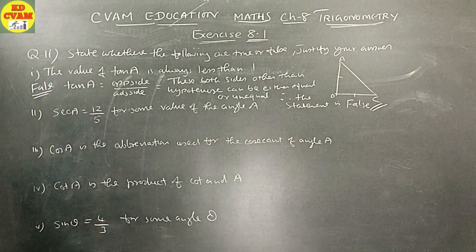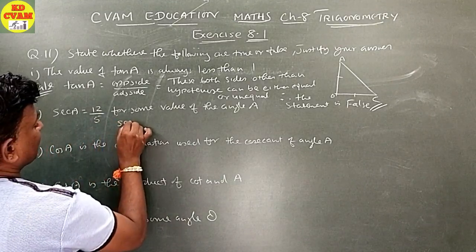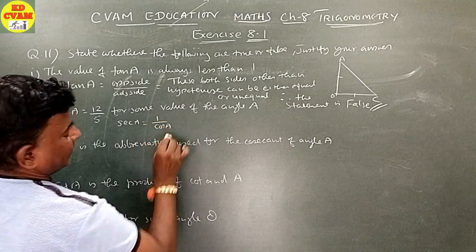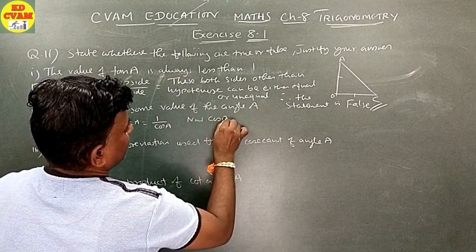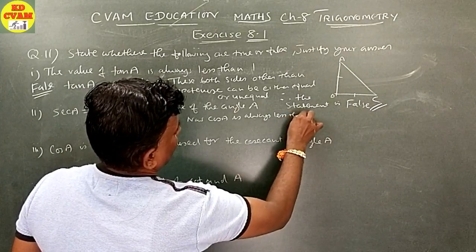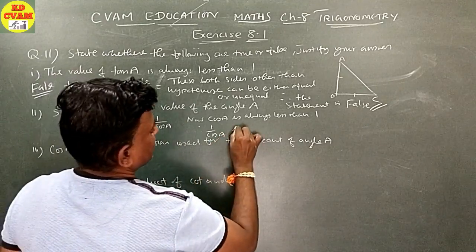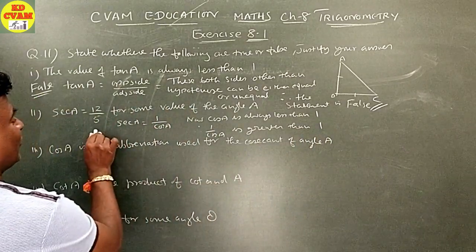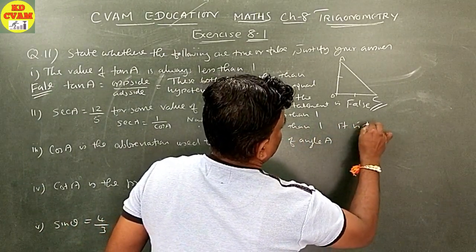Second: sec A equals 12 upon 5. Sec A is equal to 1 upon cos A. Cos A is always less than 1. Therefore, 1 upon cos A is greater than 1. So sec A is always greater than 1. It is true.